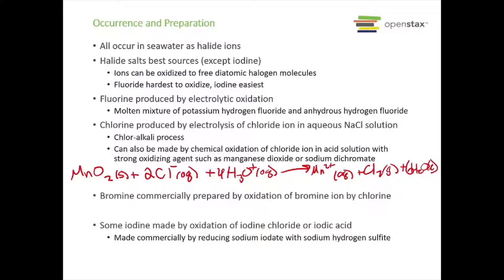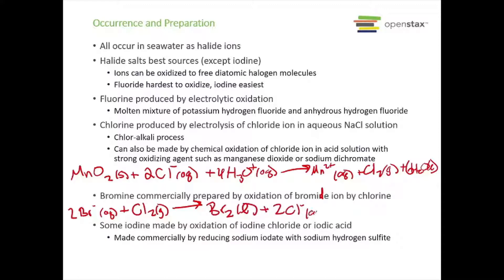Bromine is commercially prepared by oxidizing the bromide ion with chlorine. Chlorine would much rather be the chloride ion, so if we take aqueous bromide and add some chlorine, the chlorine is going to grab the negative charge and bromine takes off as Br₂. So now we've made bromine and we have some aqueous chloride ion left over.